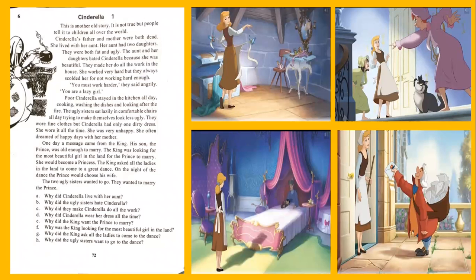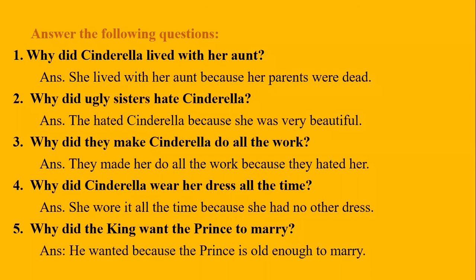Cinderella Two will be in the next lecture and you will know the full story. Let's see the question answers. Why did Cinderella live with her aunt? She lived with her aunt because her parents were dead. When you are asked 'why,' you must give the reason. Why did the ugly sisters hate Cinderella? They hated Cinderella because she was very beautiful and they were very jealous of her.